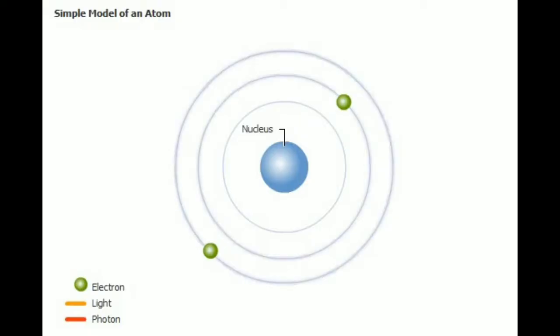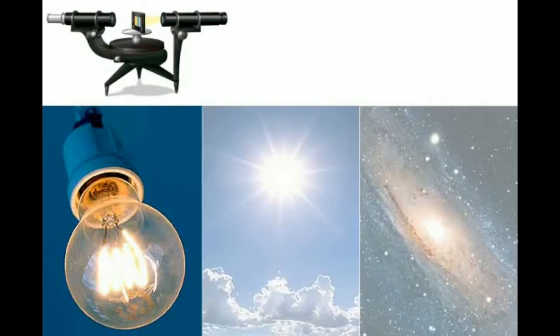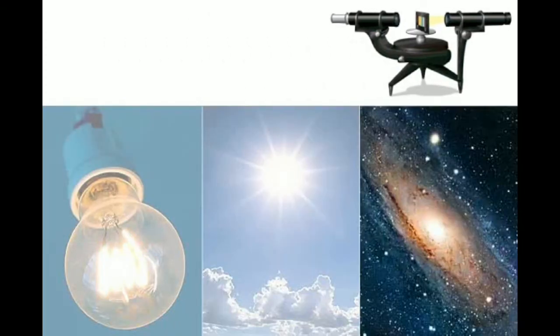The excited atom can release its extra energy by emitting it as another photon. By measuring the frequency of photons, scientists can determine which kind of atoms emitted them, and whether they originated on the Earth, the Sun, or in galaxies far away.